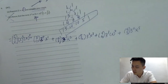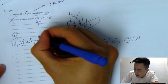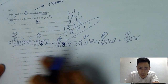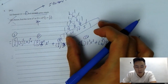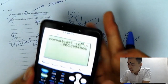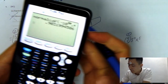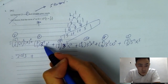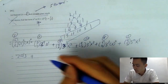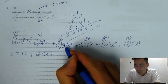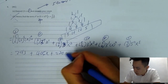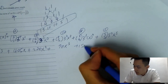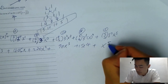Then applying the coefficients 1, 5, 10, 10, 5, 1 from Pascal's triangle, you just solve using your calculator. So it's: 1 times 3 to the power 5 — that's 243 — plus 5 times 3 to the power 4 which gives 405x, plus 10 times 27 which is 270x squared, plus 10 times 9 which is 90x cubed, plus 5 times 3 which is 15x to the 4, plus 1 times 1 times x to the 5, so just x to the 5.